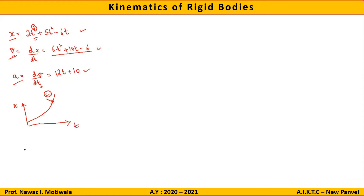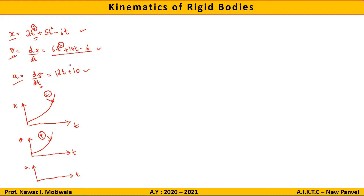Similarly, if I draw the velocity-time graph, the highest degree in the velocity equation is 2, meaning it is a parabolic curve — so I draw a parabola. For the acceleration-time graph, the highest degree of time in the acceleration equation is 1, making it a linear equation, so I draw a straight line. These three curves of displacement, velocity, and acceleration with respect to time are known as motion curves.